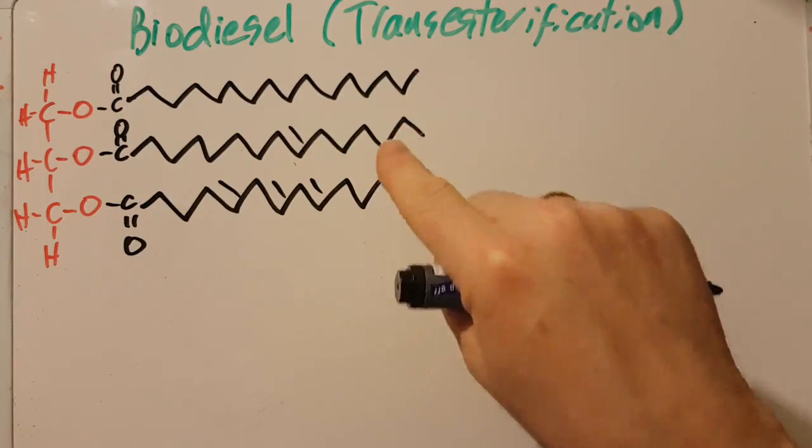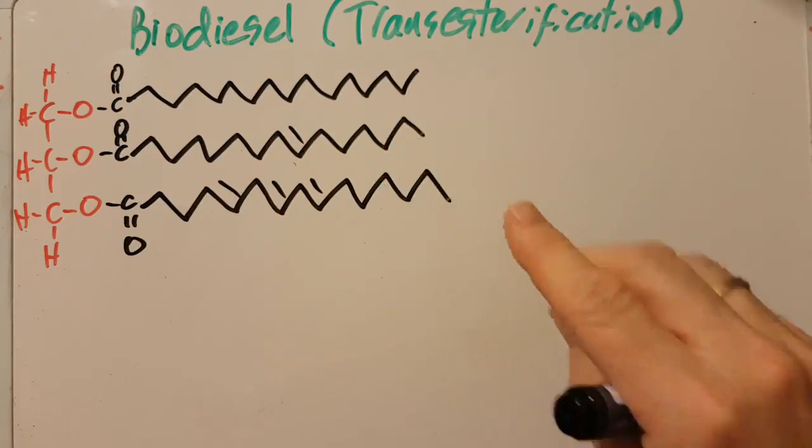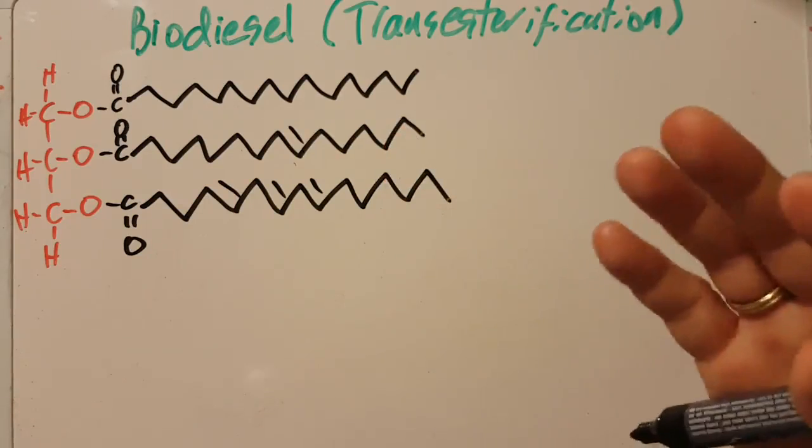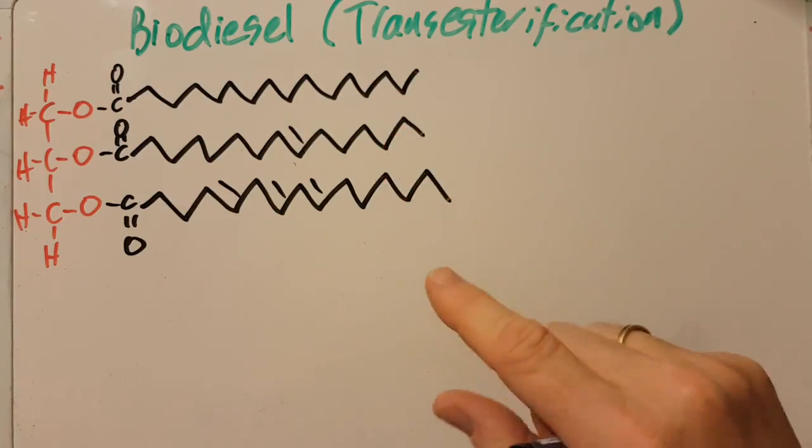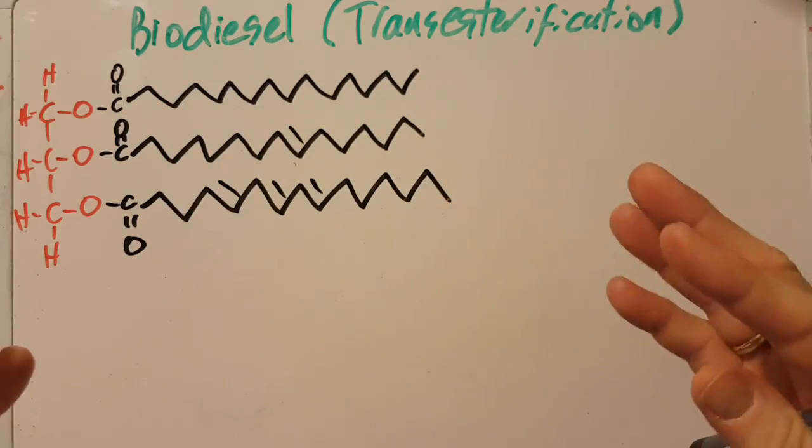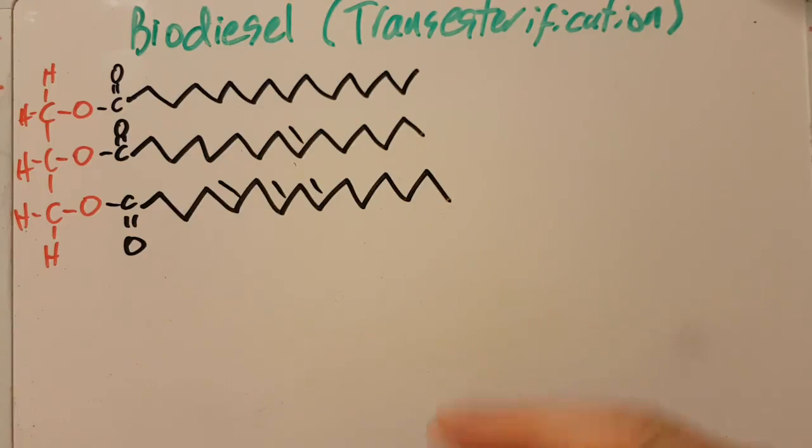Now this molecule is very viscous, so it won't pass down pipes easily, and it's hard to use as a diesel fuel. It's just too thick and sticky because it has lots of electrons. And if you have lots of electrons, then you've got lots of London dispersion forces and lots of intermolecular bonds. So it's a very sticky molecule.